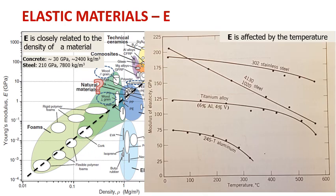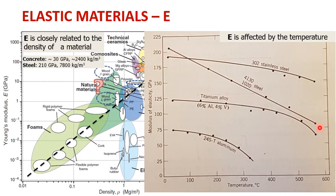Another parameter that affects modulus of elasticity is temperature. Here you see the modulus of elasticity of various metals subjected to extreme temperatures. At room temperature, as temperature increases, all of these metals lose their modulus of elasticity. For steel, this can be drastic — from 210 gigapascals, in the case of a fire at about 500 degrees Celsius, its modulus of elasticity will come down to below 100 gigapascals, meaning it loses its capacity to resist stresses.